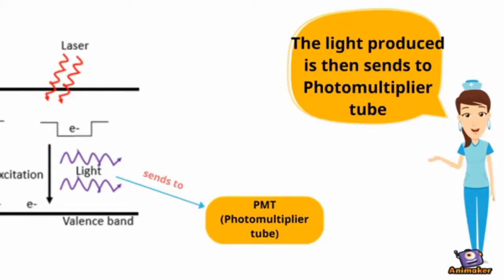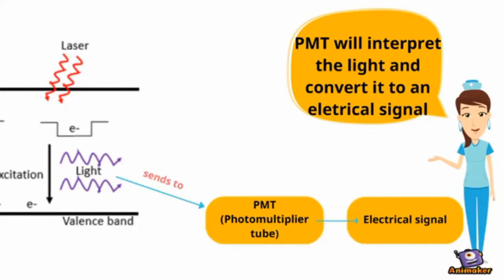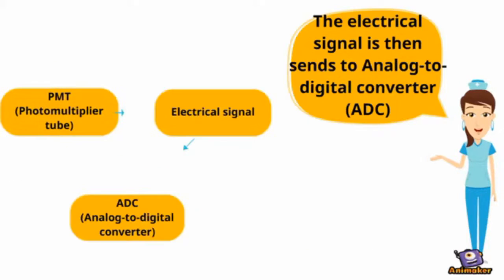The light produced is then sent to a photomultiplier tube, which is an ultra-sensitive photomultiplier tube. The PMT will interpret the light and convert it to an electrical signal.